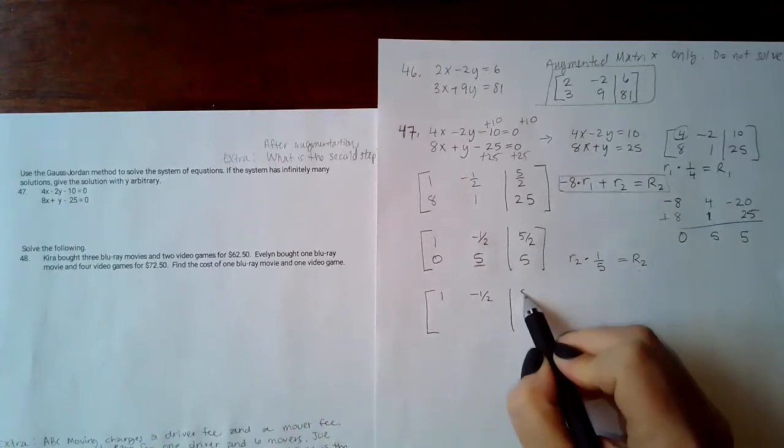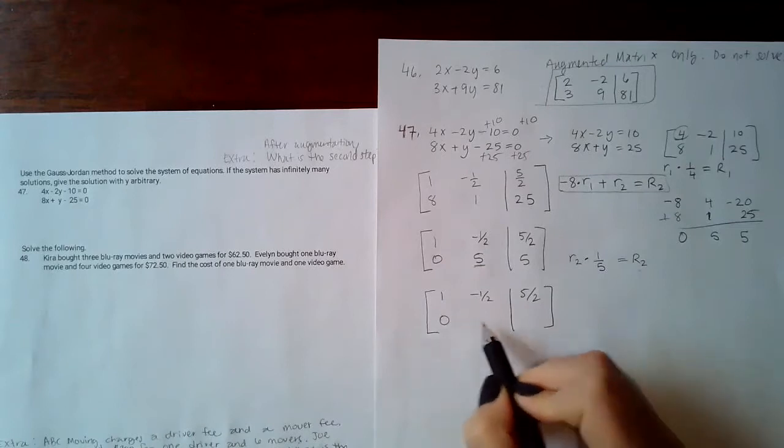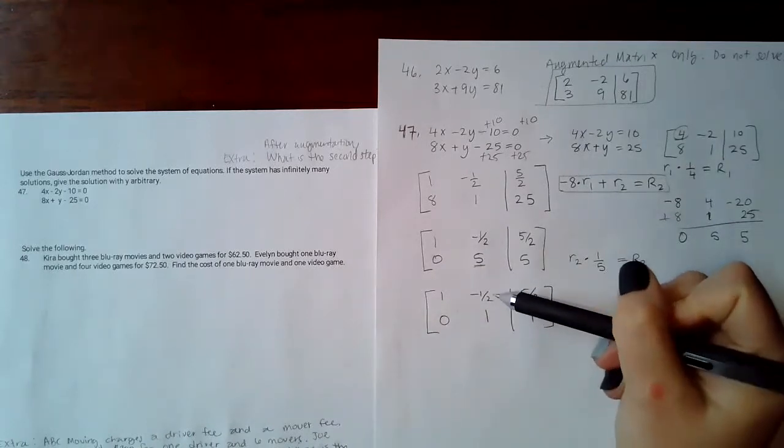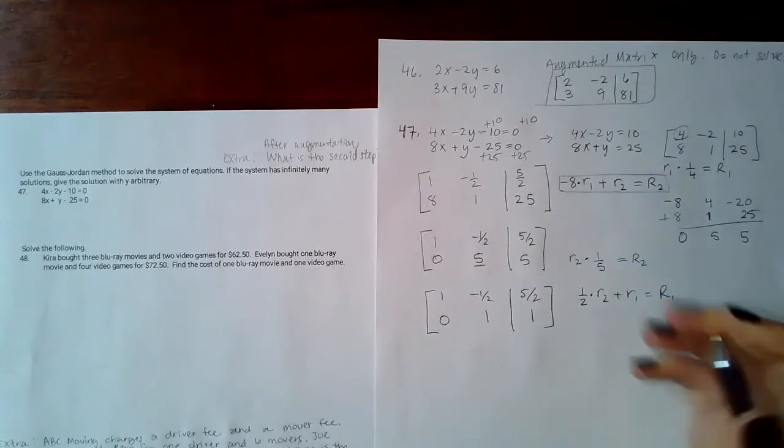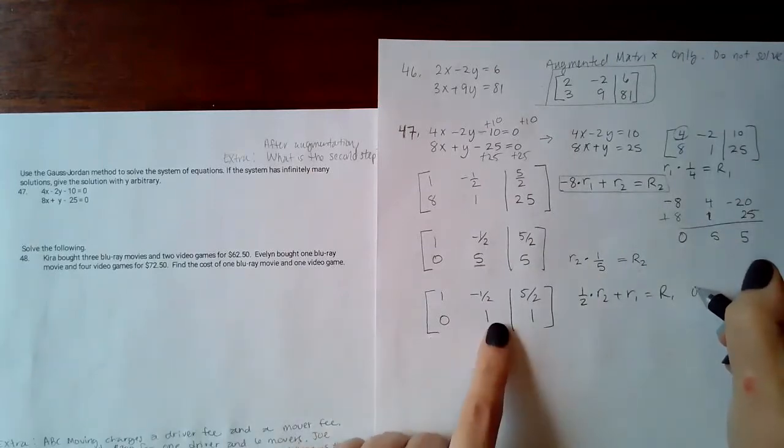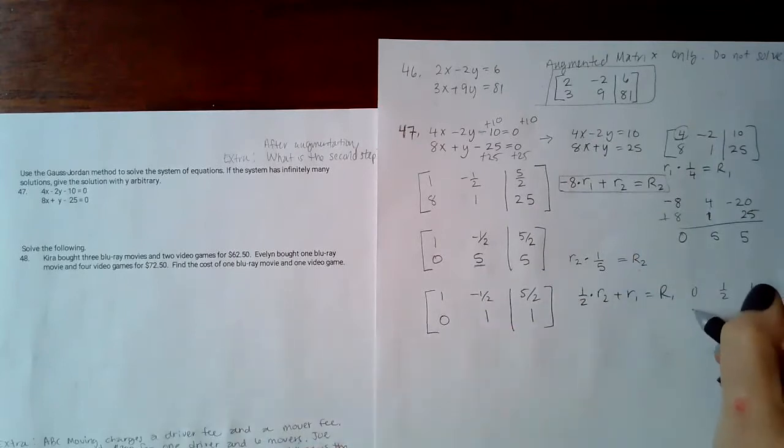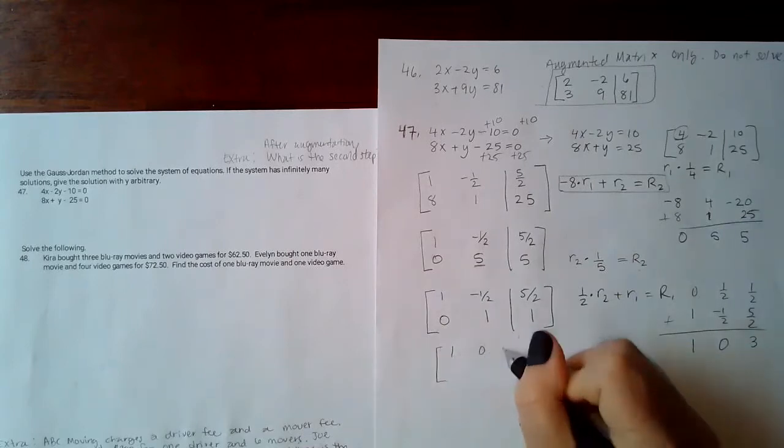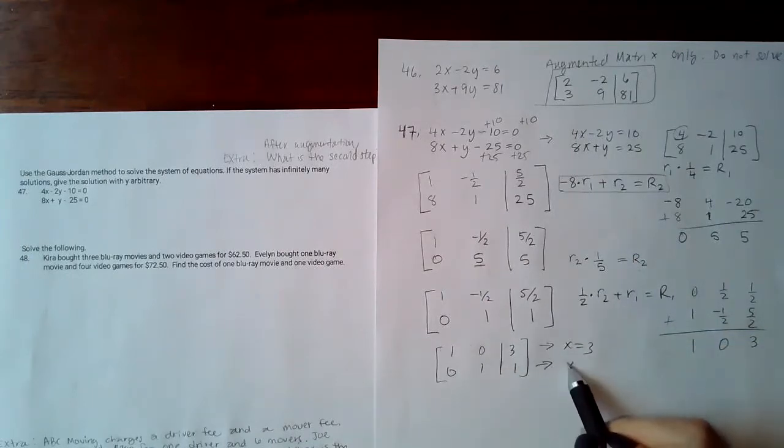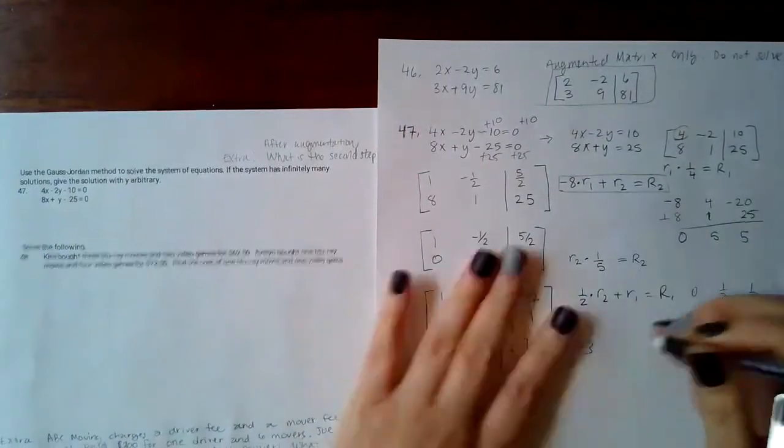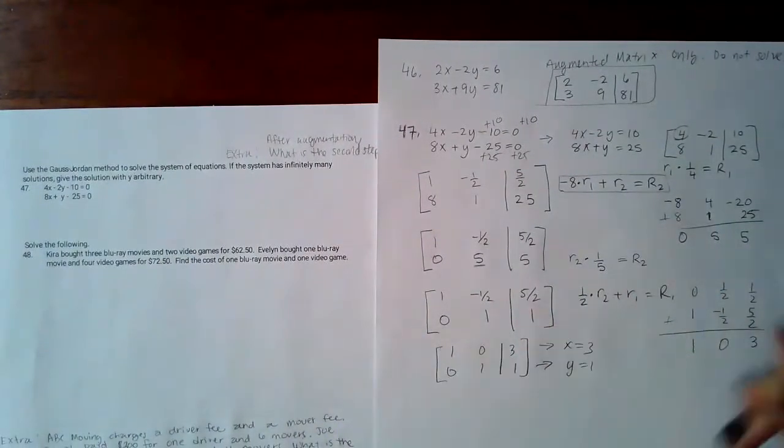So 1, negative 1/2, 5/2, and then row 2 will be 0, 1, and 1. Now I need to use this one to change that. So I'm going to do positive 1/2 times row 2 plus row 1 to give me my new row 1. 1/2 times 0 is 0, 1/2 times 1 is 1/2, 1/2 times 1 is 1/2. Row 1 goes underneath, add I get 1, I get 0, I get 6/2 which is 3. So then now I know that x equals 3 and y equals 1. If they give you the answers in point form, then you just need to have 3 comma 1.